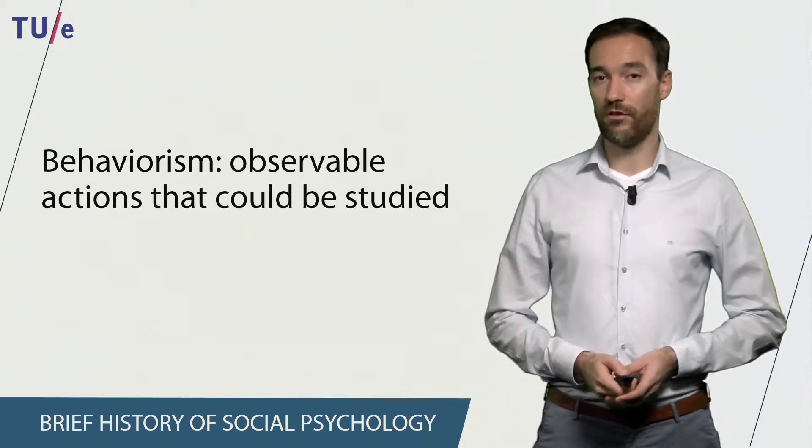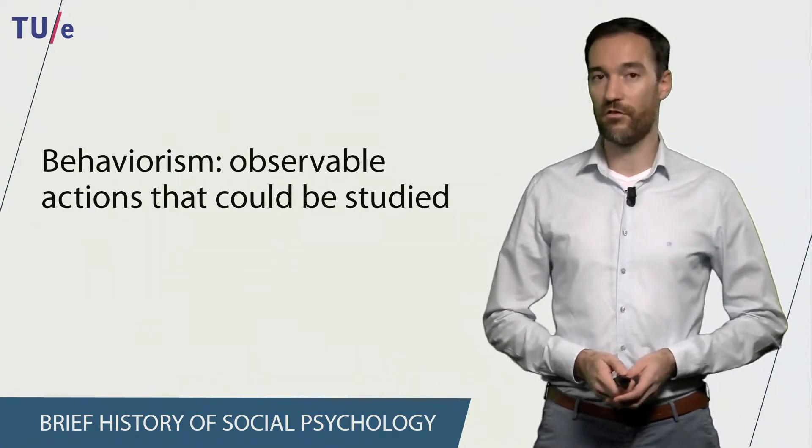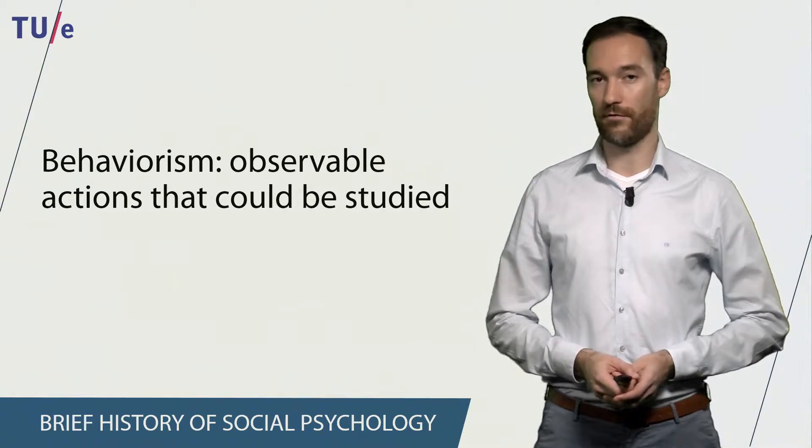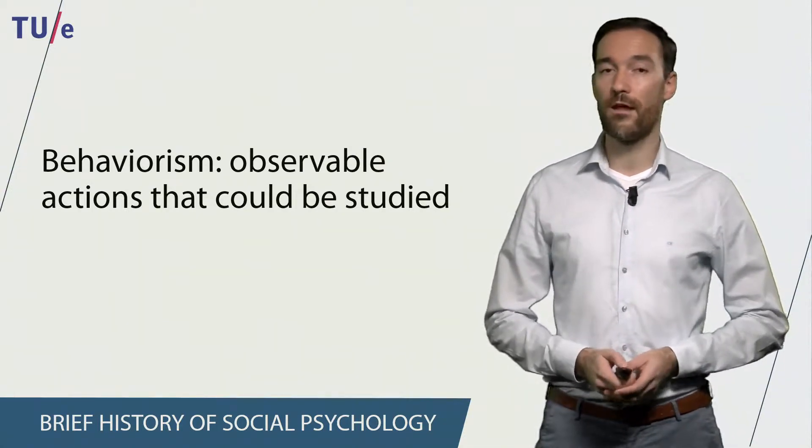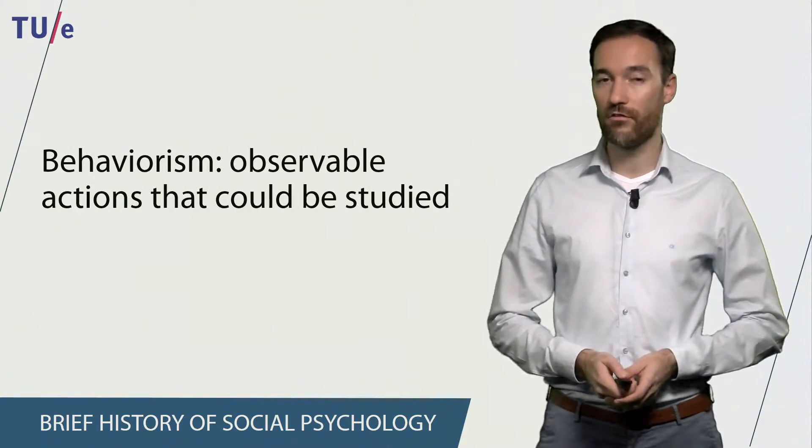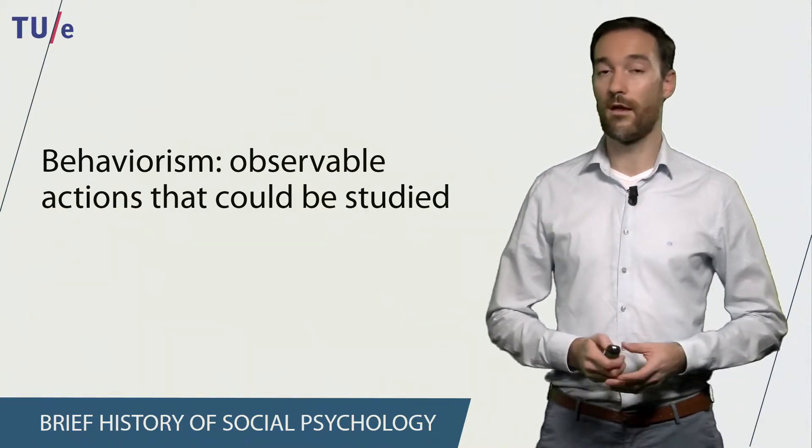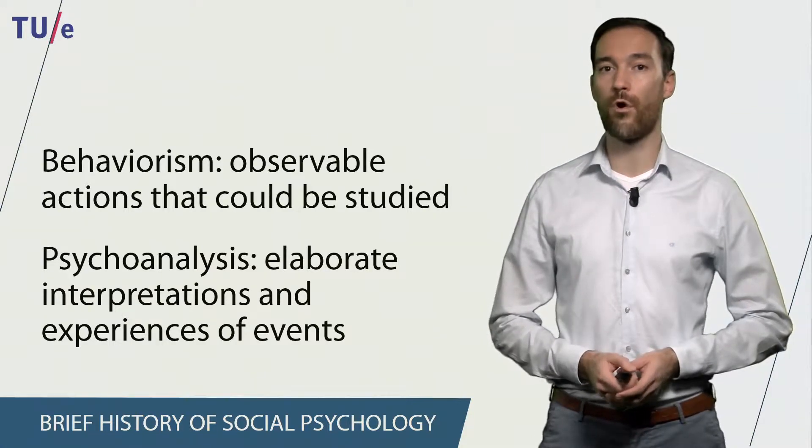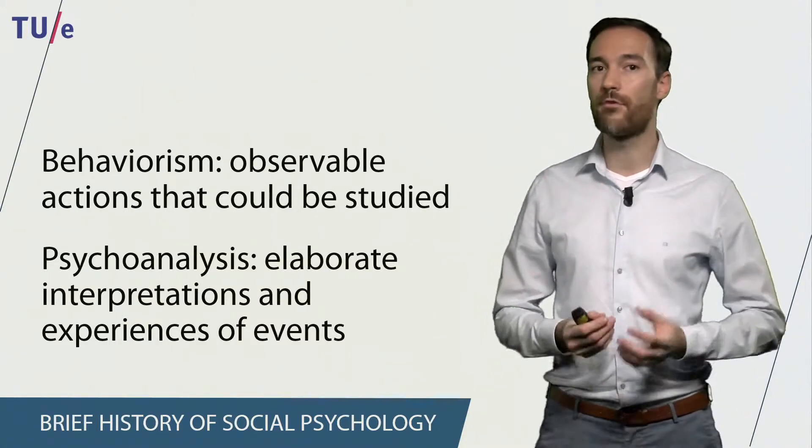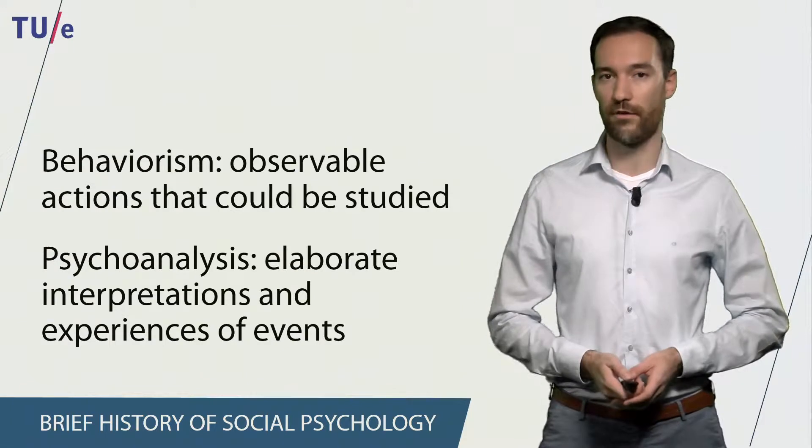In the 1950s and 60s two different perspectives existed on how to explain human behavior. The first one is what we call behaviorism. Behaviorism is studying the observable actions that people show. In contrast to this, Freudian psychoanalysis focuses more on trying to have an elaborate interpretation and experience of an event.